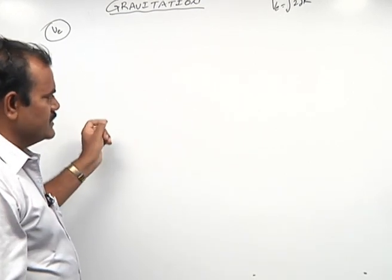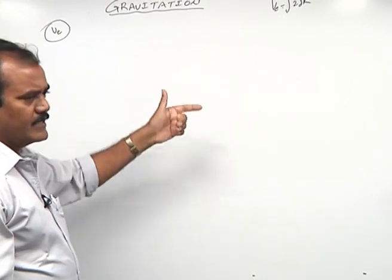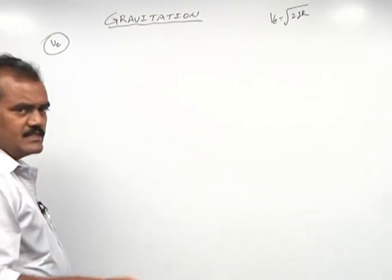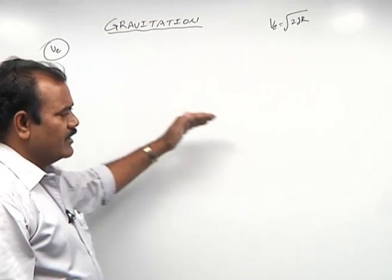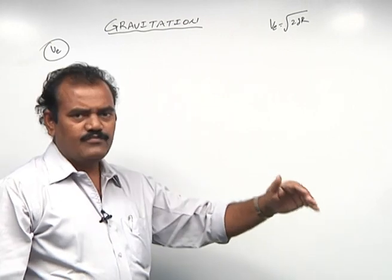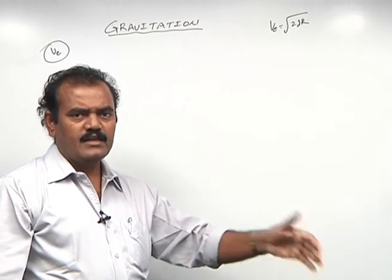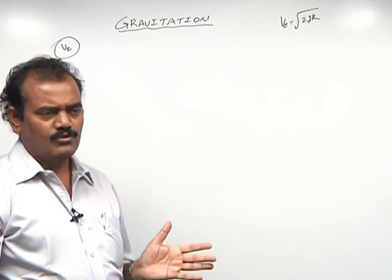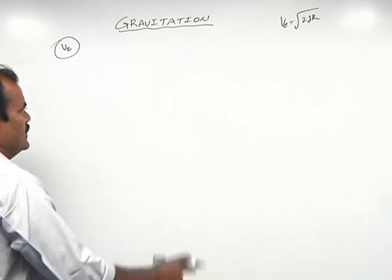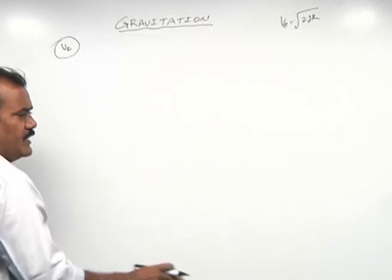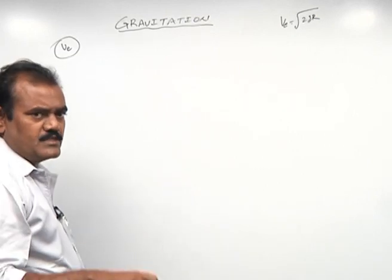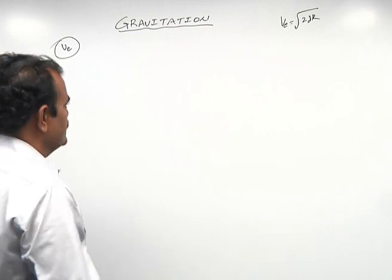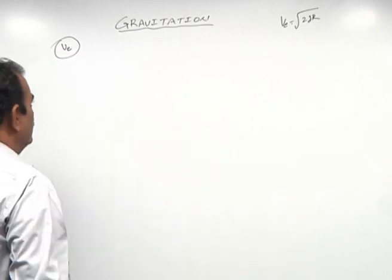That body is just pulled out of the Earth's gravitational field, and that is why this is the minimum velocity. Minimum velocity means on reaching infinity, its velocity becomes zero. That is why it is the minimum velocity with which a body is projected so that it may just overcome the gravitational field - that velocity is known as escape velocity.